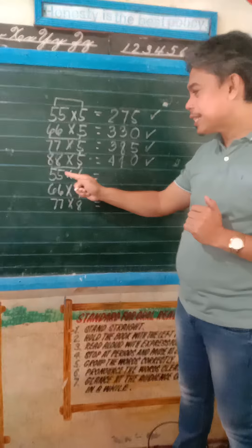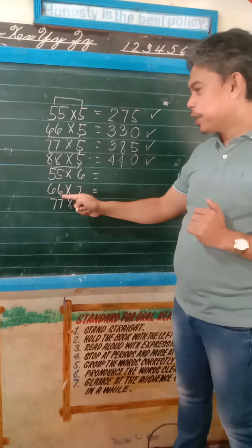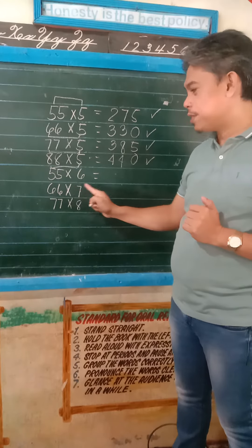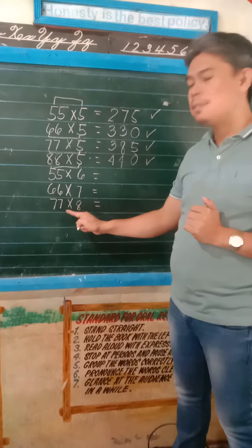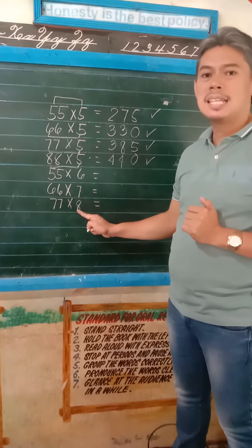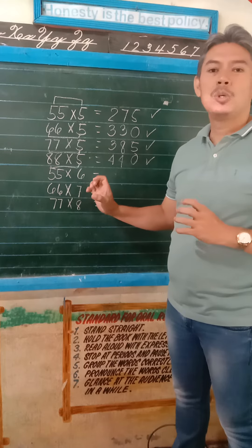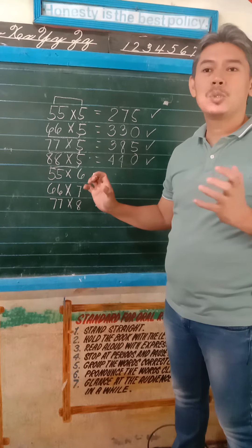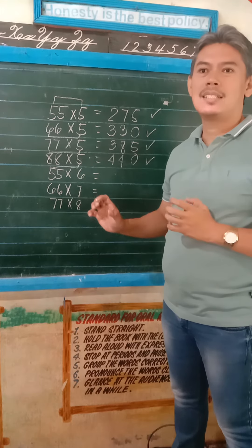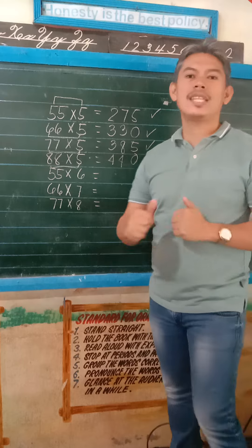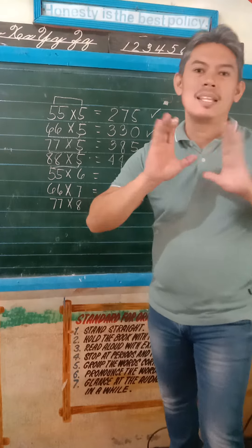The next numbers to try: 55 times 6, 66 times 7, 77 times 8. You may try to answer and solve them. So that's it. Goodbye.